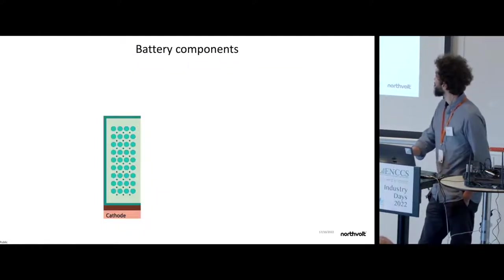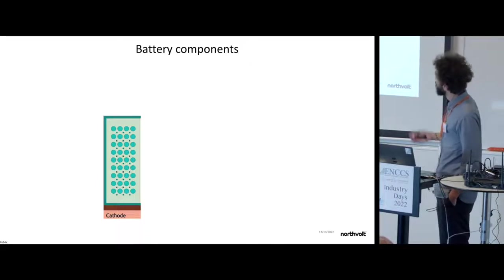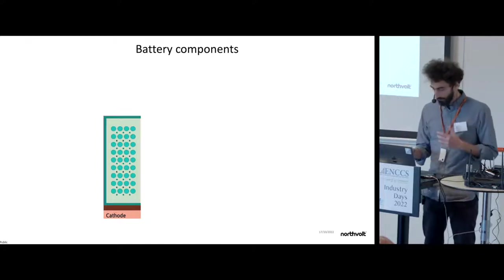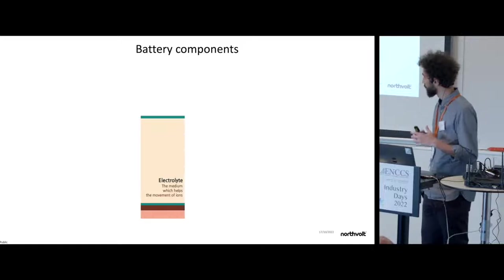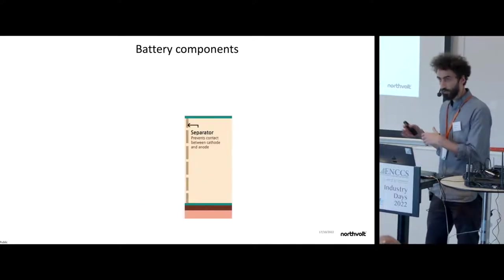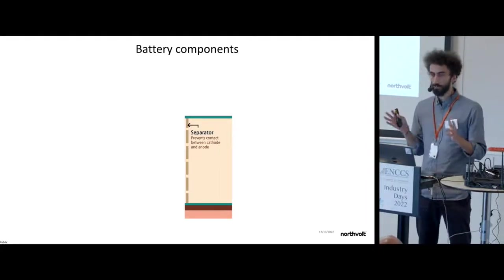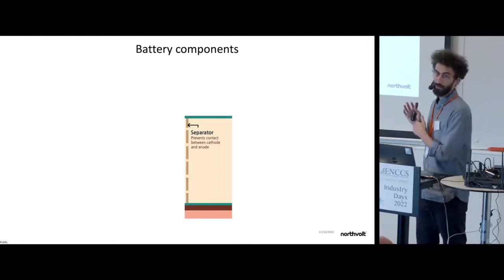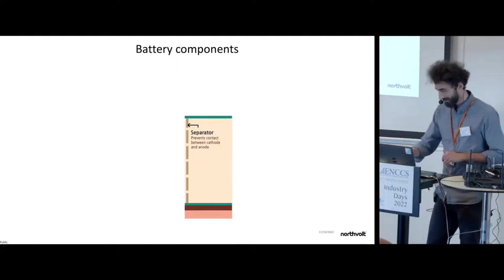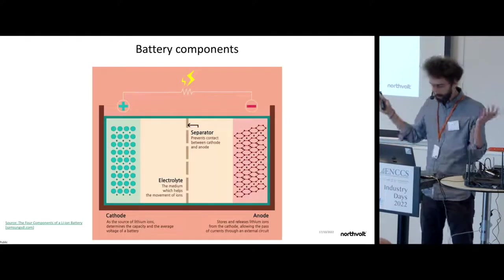Battery components: for those of you who don't know how a battery is made, you have the cathode which stores the energy, then you have the electrolyte which is the medium through which the ions are transferred from one side to the other of the battery. You have the separator which acts as a barrier to avoid electric contact between the anode and the cathode, which can result in very bad stuff like flames and smoke. And obviously the anode where the energy is stored again. This is the complete picture of the battery.